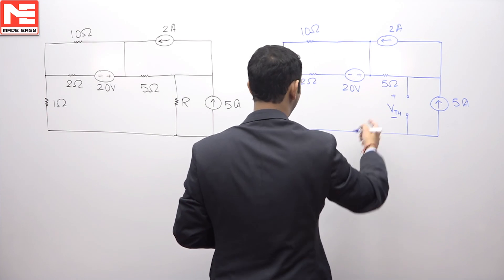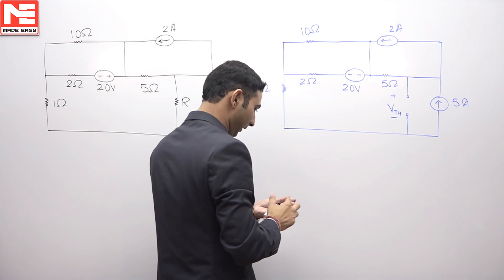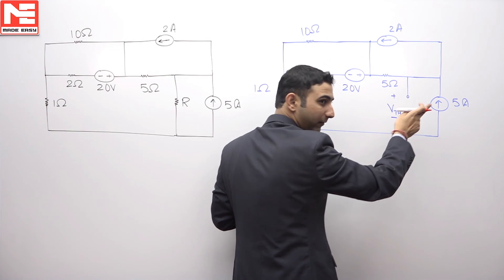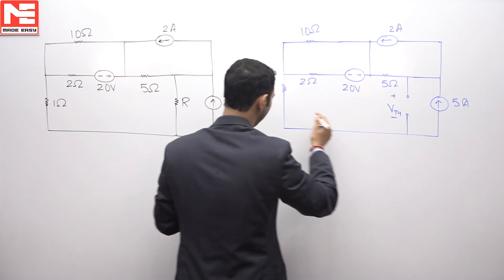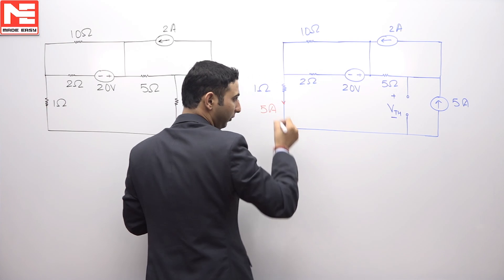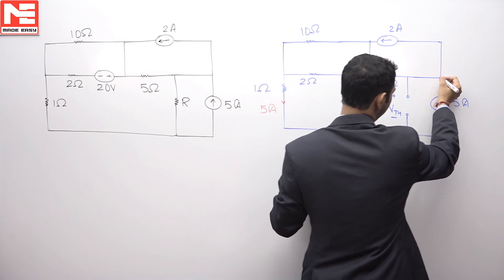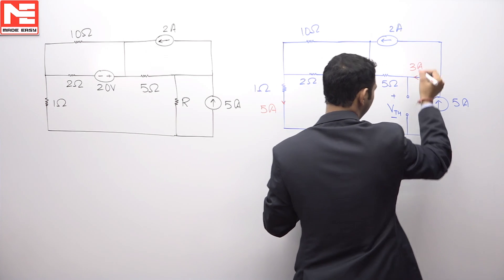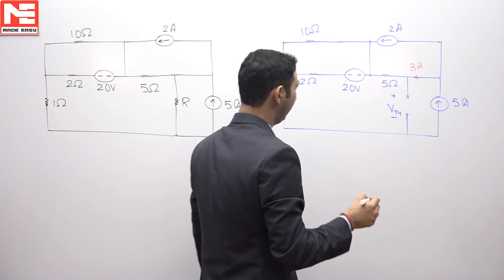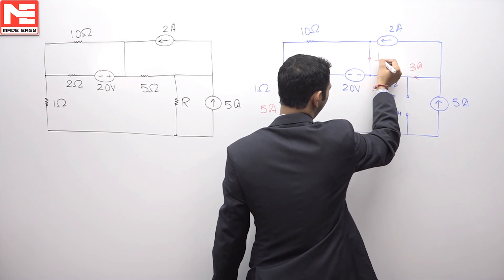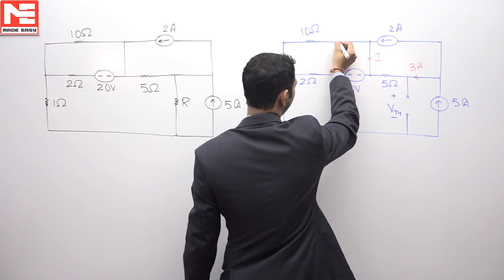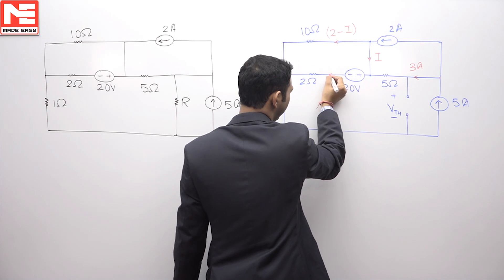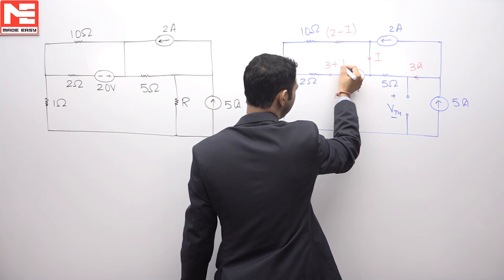This is the circuit that we have; we need to find Vth. You can see 5 ampere is flowing in this direction. As it is open circuit, the whole 5 ampere is flowing from here, so the 5 ampere must be flowing from here. Now, applying KCL at this point: 5 was going in this direction, 2 is flowing in this direction, so the rest of the 3 ampere is flowing in this direction. Assuming some current i is flowing in this branch, here it must be 2 minus i, and this i and 3 add up to flow as 3 plus i.